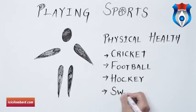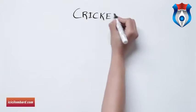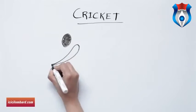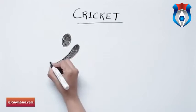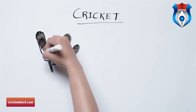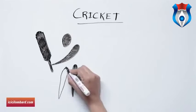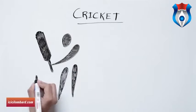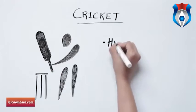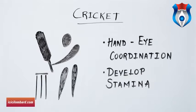Let's look at a few sports and how they impact us. One: cricket. There are many benefits of playing cricket. Cricket helps in enhancing hand-eye coordination. When you play cricket you get fit by running between wickets, running up to the ball and running after the ball to field it. You will also develop stamina because cricket games can last for a very long time.